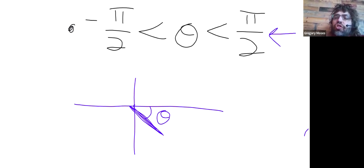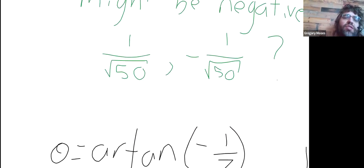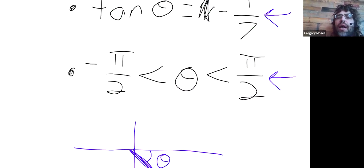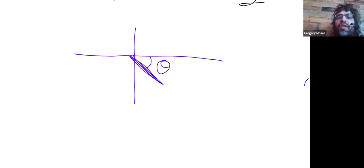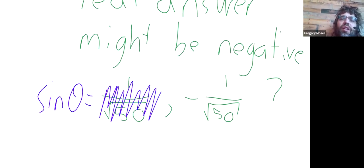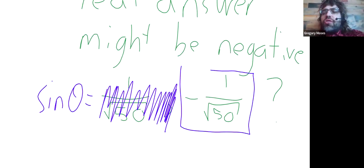So, what's the sine of theta? Well, it's either positive or negative. Angles in the fourth quadrant have negative y-coordinates, so they have negative sines, leaving us with negative one over the square root of 50 as an answer.